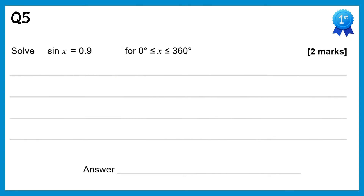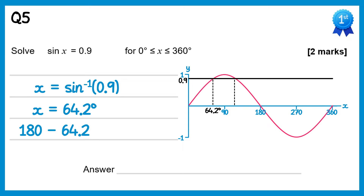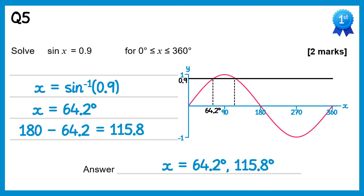We start this question by doing inverse sin of 0.9. Using your calculator you get 64.2 degrees. We use the graph of sin x to find the other solution — drawing a horizontal line at 0.9 shows two solutions. We've got the one on the left at 64.2 degrees, so we use the symmetry: 180 take away 64.2 gives the other solution. So there are two solutions: 64.2 degrees and 115.8 degrees.